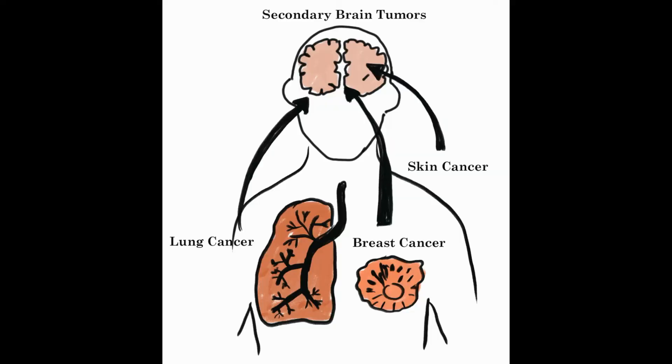Secondary brain tumours are from tumours outside the brain. They mainly arise from lung cancers, breast cancers, and skin cancers.